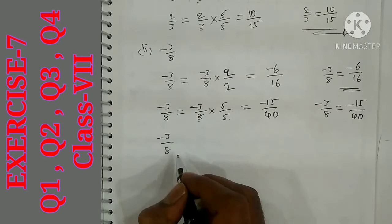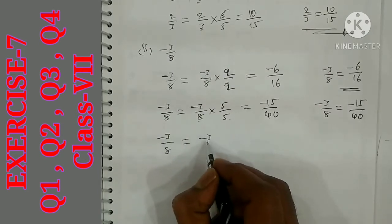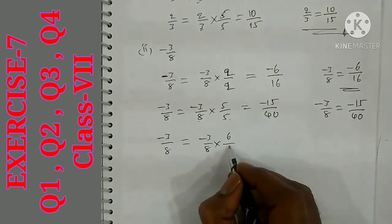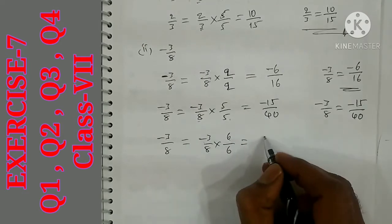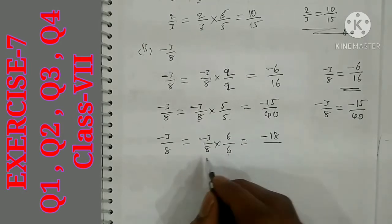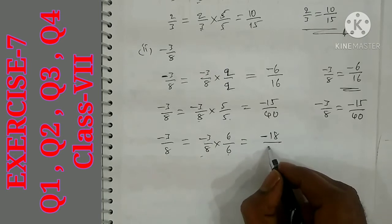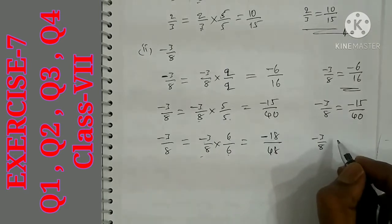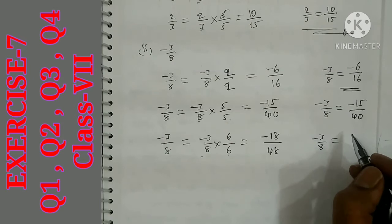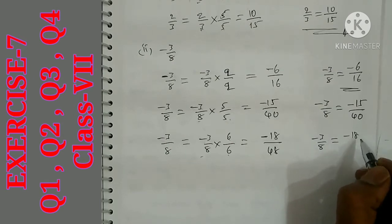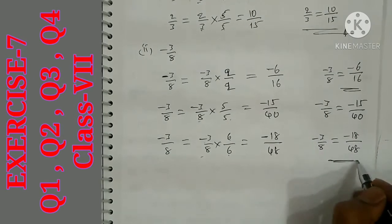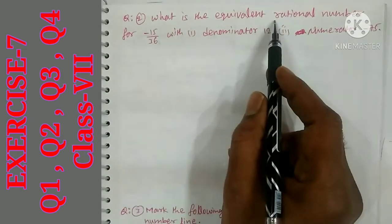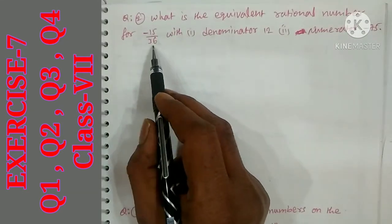Third equivalent: minus 3 by 8 multiplied by 6 over 6. 6×3 = 18, 6×8 = 48. So minus 3 by 8 is equal to minus 18 by 48. These are the three equivalent rational numbers for minus 3 by 8.